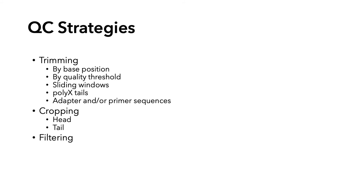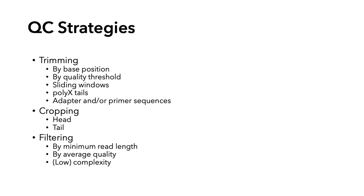Another general QC strategy is filtering, where you can filter reads based on things like minimum read length, average quality, low complexity sequences, and unpaired reads in paired-end sequencing. All these listed strategies are general QC approaches with variations on a theme, so you'll want to read your QC program manual and really understand what it's doing and how you can use it to suit your needs.